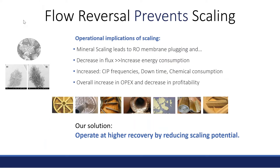What flow reversal is basically doing is preventing scaling. Mineral scaling leads to plugging, biofouling, and decrease in flux. When we operate with flow reversal, we increase high recovery by reducing the scaling potential. Prior to the induction time — when we start seeing signs of scaling — we reverse the flow in the pressure vessel. The area that was becoming highly concentrated is then rinsed by an under-saturated solution, which removes any scale that formed.